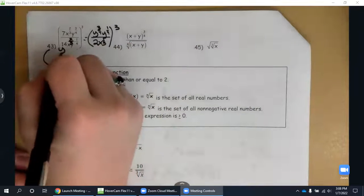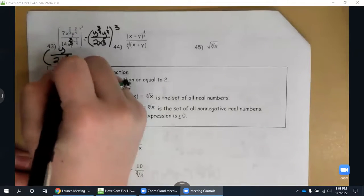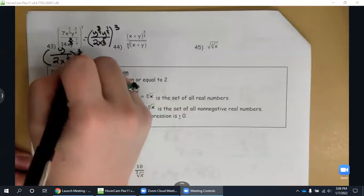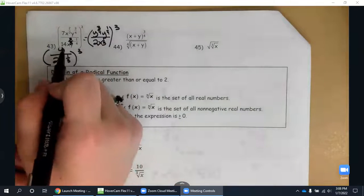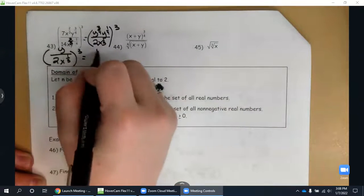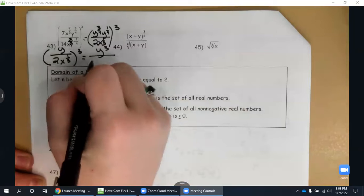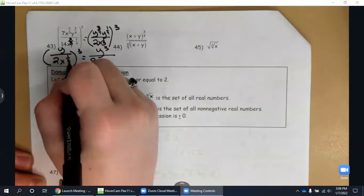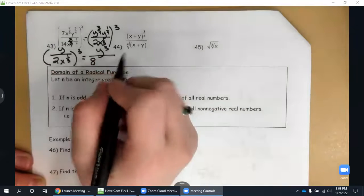So now I need to distribute that cubed everywhere. So y cubed, two cubed is eight, x to the one-third times three, that's going to be three over three, which is just one. So there's my result for 43.